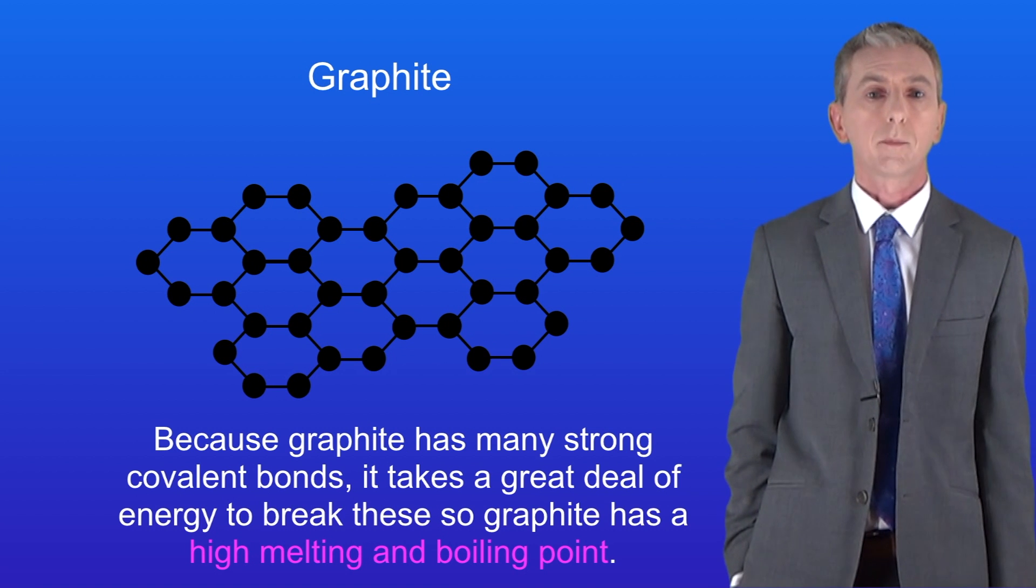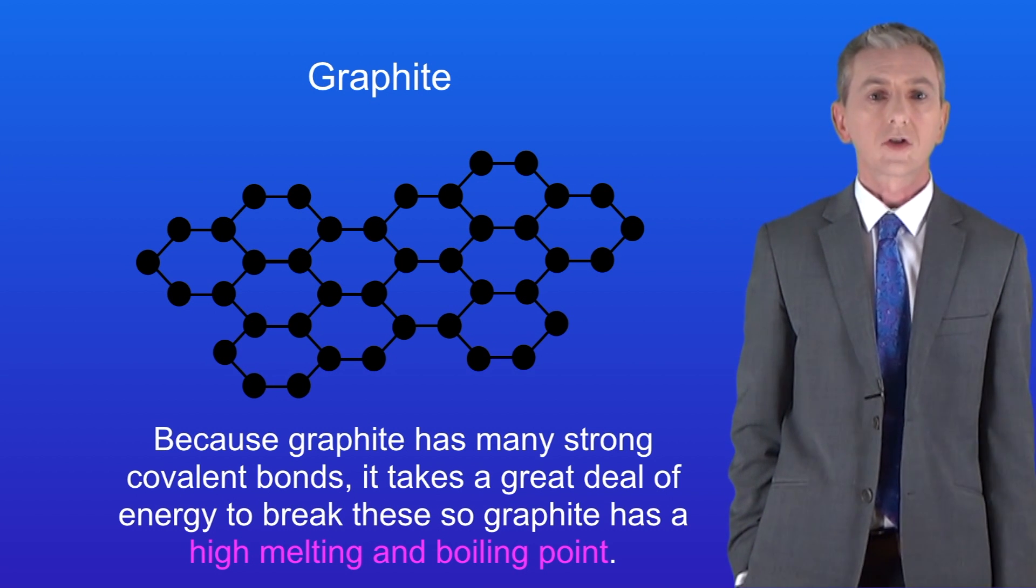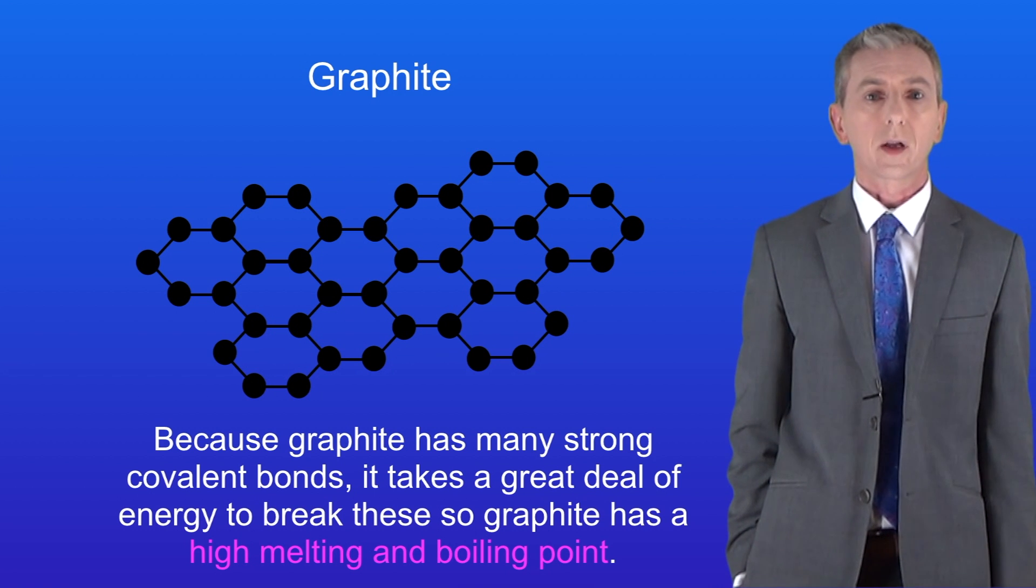Because graphite has many strong covalent bonds it takes a great deal of energy to break these so graphite has a high melting and boiling point.